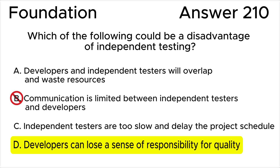Answer B is invalid. Effective communication between independent testers and developers is essential for successful testing. Limited communication can indeed be a disadvantage, but it is not inherent to independent testing. Properly managed independent testing should have clear channels of communication established between testers and developers.